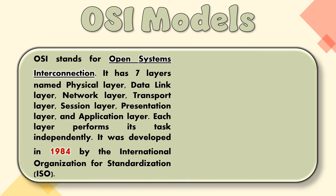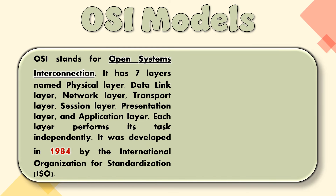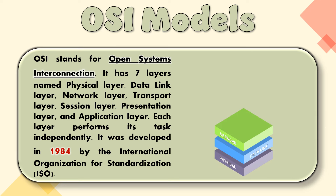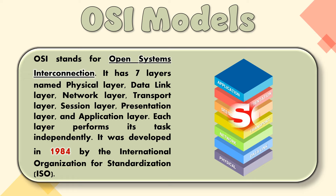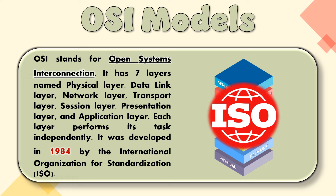The OSI Model stands for Open Systems Interconnection. It has seven layers: Physical Layer, Data Link Layer, Network Layer, Transport Layer, Session Layer, Presentation Layer, and Application Layer. Each layer performs its task independently. It was developed in 1984 by the International Organization for Standardization, ISO.